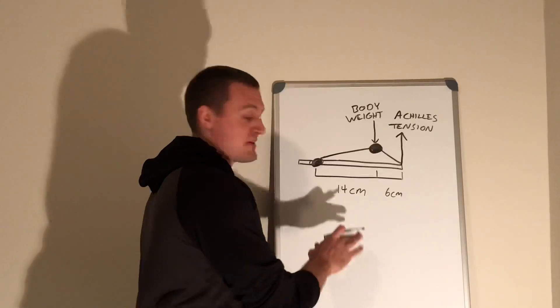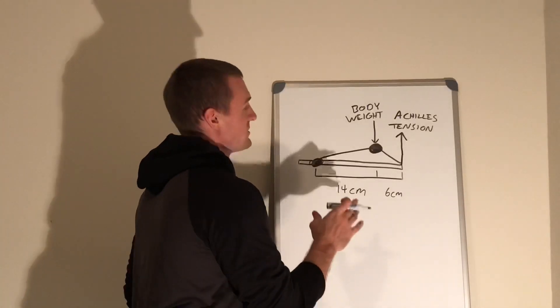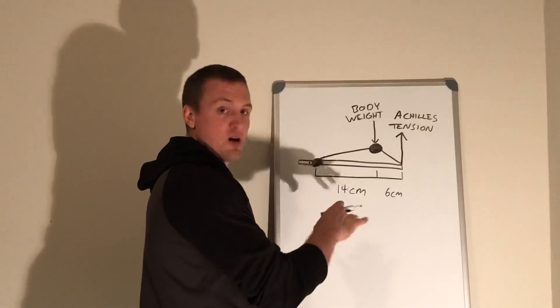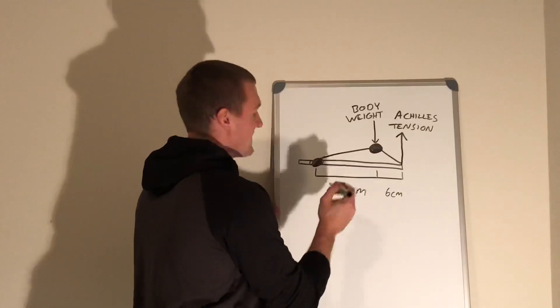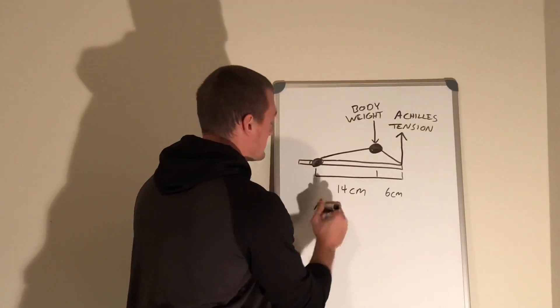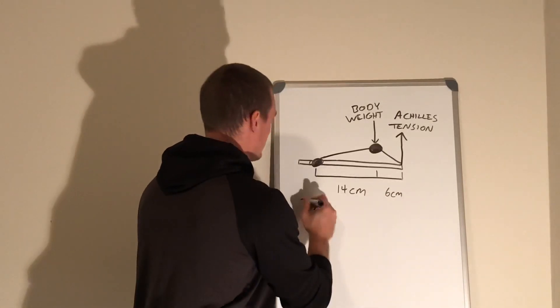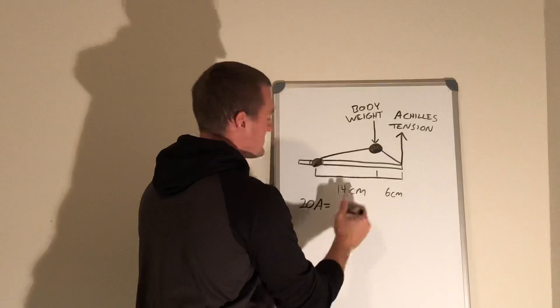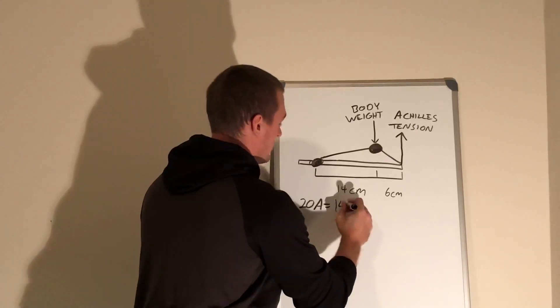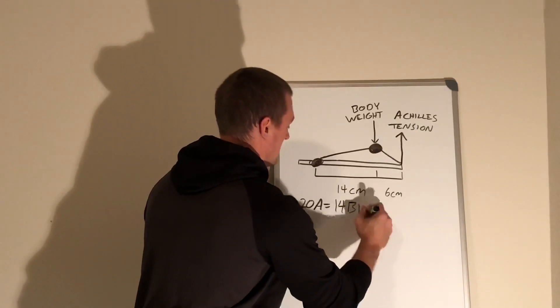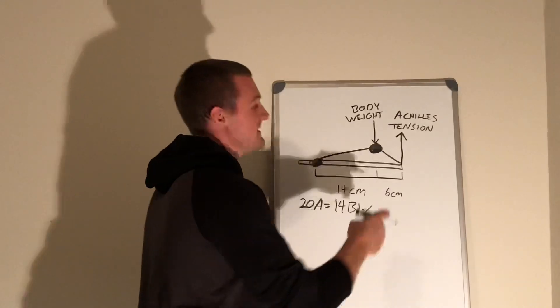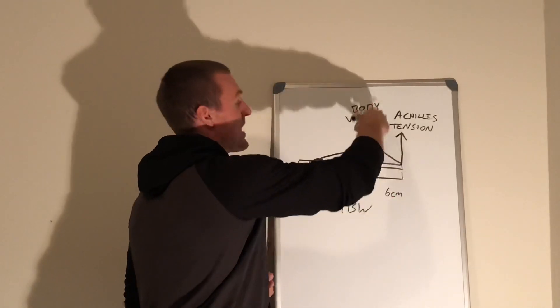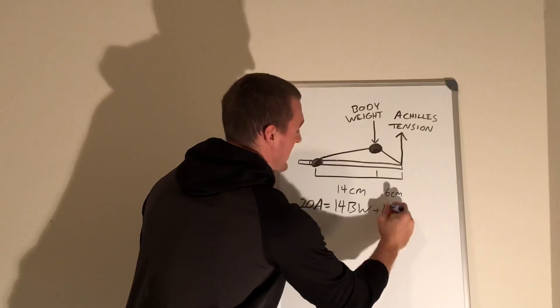If we put in some theoretical distances here, we would say that just to hold yourself up on the ball of your foot, your Achilles tension A times its moment arm 20 centimeters would have to equal body weight times its moment arm 14 plus the Achilles tension applied down at the ankle, which we'll just call 14A.